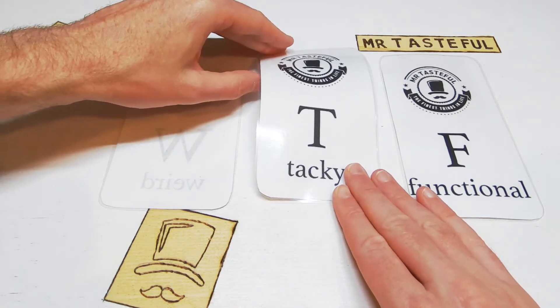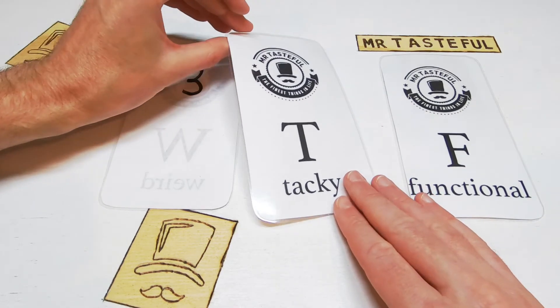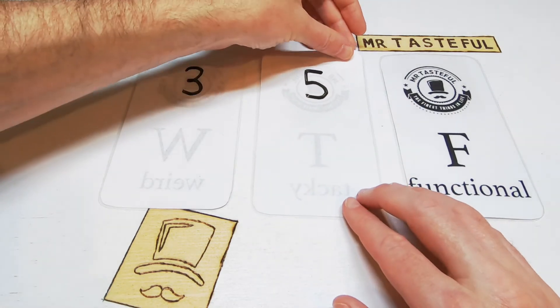Next we move on to tacky. And it's just another magic prop. Five out of ten.